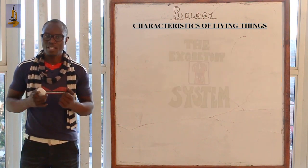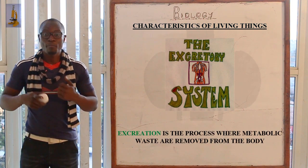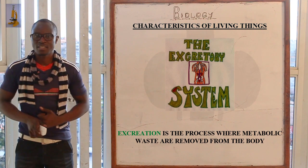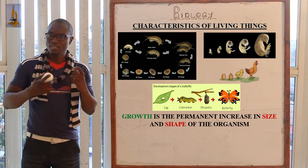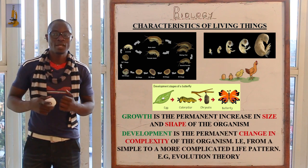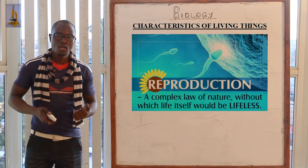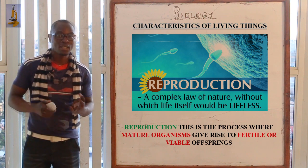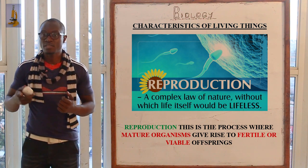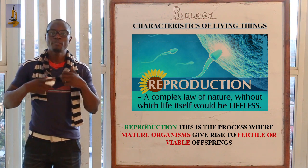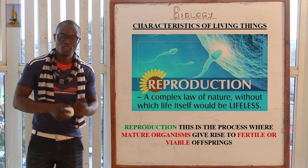Excretion is the process whereby metabolic waste products are removed from the body. We also have growth and development — growth is the permanent increase in size, and development is the permanent change in complexity of the organism. Reproduction is the process where mature organisms give rise to fertile offspring. Note: the organisms must be mature.